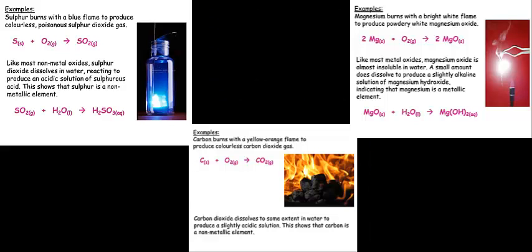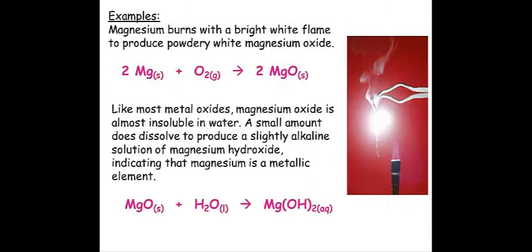If we look at the oxides that were produced. Magnesium oxide, like most metal oxides, is almost insoluble in water. However, when small amounts do dissolve in water, they produce a slightly alkaline solution. In this case, magnesium oxide will dissolve in water to produce magnesium hydroxide.